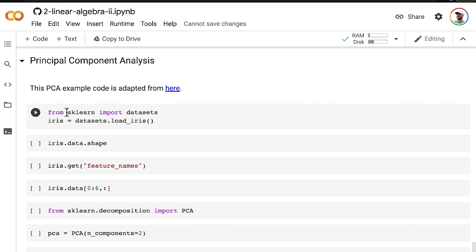Let's start by importing this specific data set. It's called the IRIS data set, and it's found in scikit-learn.